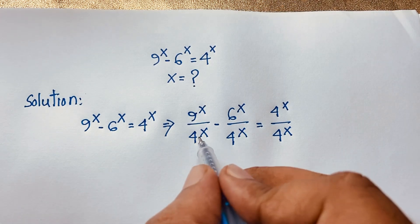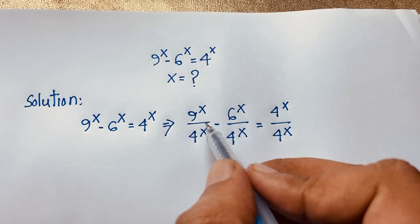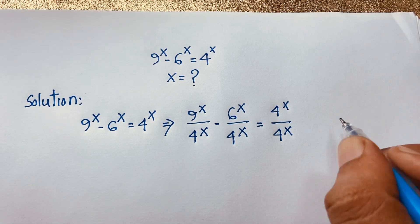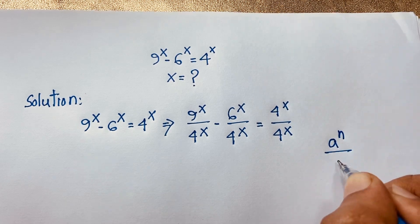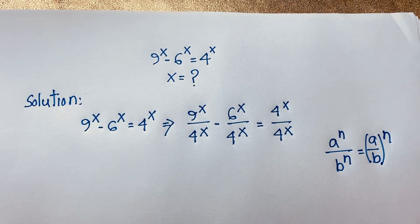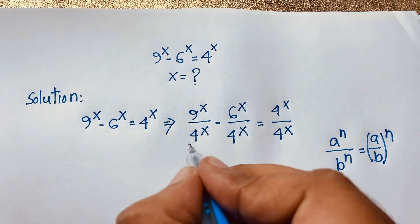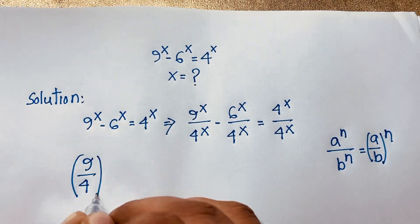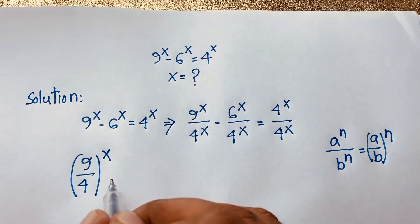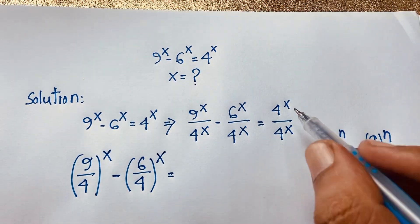You can see that in each term the exponent is the same. We know that a to the power n over b to the power n equals (a/b) to the power n. Applying this formula, it becomes (9/4) to the power x minus (6/4) to the power x is equal to 4 to the power x divided by 4 to the power x, which is 1.